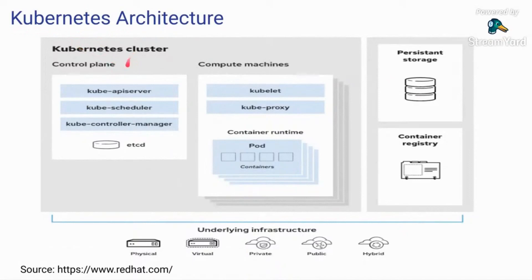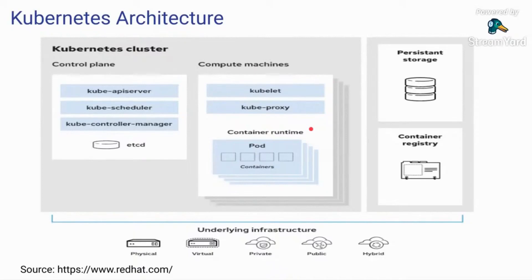A Kubernetes cluster has two parts. One is the control plane, which is also called a master node sometimes, though these days they don't use the master-slave terminology. And then you have a set of compute machines or nodes. A minimum of one node is required to run a Kubernetes cluster, but there can be hundreds or thousands of Kubernetes nodes.